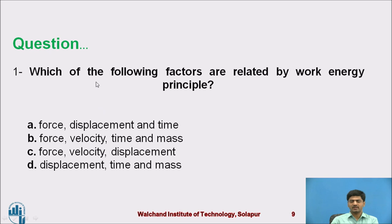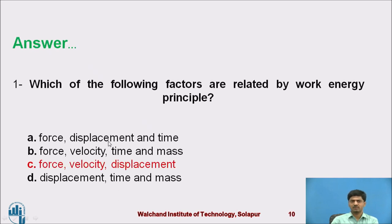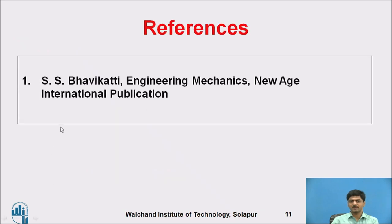Please pause this video, read this particular question, and try to give the answer: What are the factors related by the work-energy principle? The answer is: force, velocity, and displacement — specifically initial velocity, final velocity, and force. This is the correct answer. To prepare this session, I referred to these particular references. Thank you.